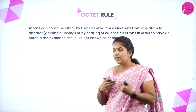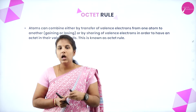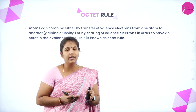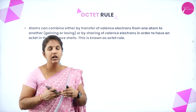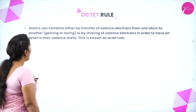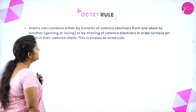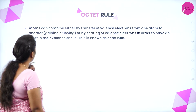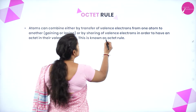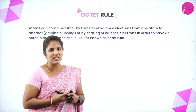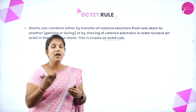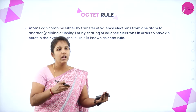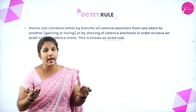Now the octet rule. Octet is nothing but the tendency of an atom to attain the 8th electron in its valence shell — that is known as the octet rule. Atoms can combine either by transfer of valence electrons from one atom to another or by sharing of electrons in order to have an octet in their valence shell. This tendency can be caused either by loss of electron, by gain of electron, or by sharing of electrons.